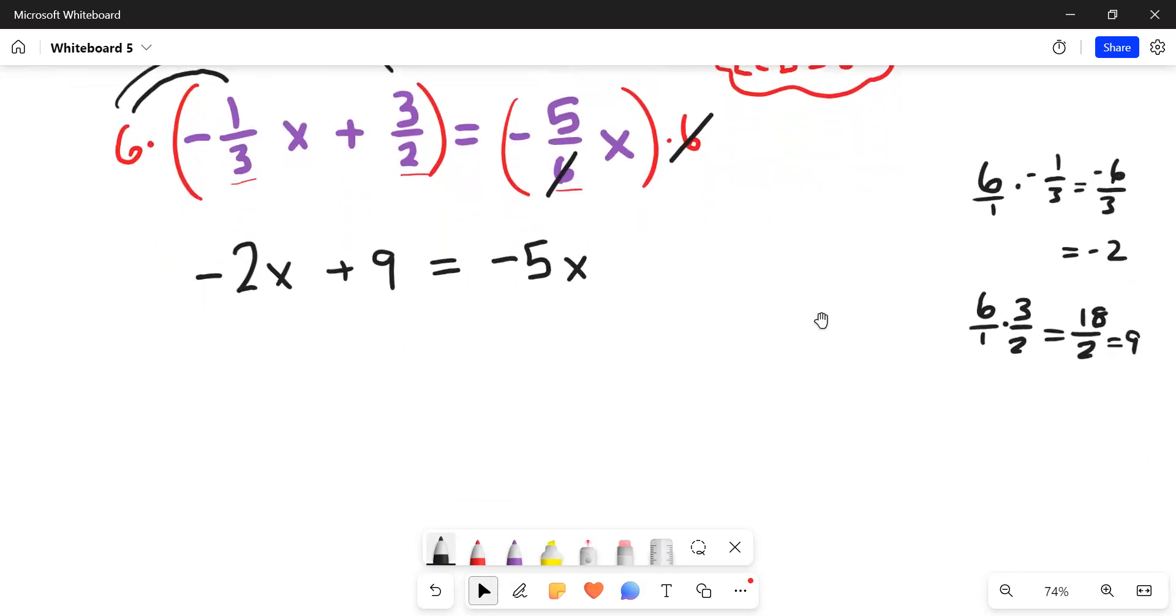Just taking a couple more steps here, we could add two x to both the left and right hand side of this equation, leaving us with nine equals negative three x. And then dividing each side by negative three will give us the answer of x equals negative three.